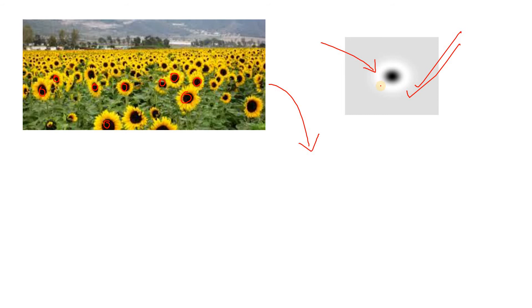So now I hope you can understand the relationship between Laplacian of Gaussian and blob detection. Basically, the Laplacian of Gaussian filter generates this kind of pattern, and we can do cross correlation with our original image to detect such blobs — those blobs which are dark-colored with surrounding bright pixels. There is another name for this particular filter: blob filter, because it can be used for finding blobs. The pattern also looks like an eye, so it is also called the eye filter.